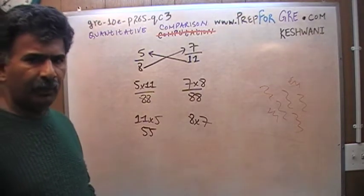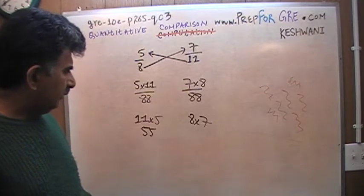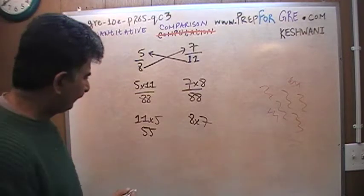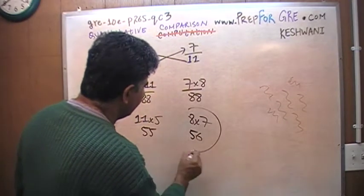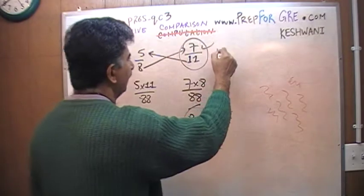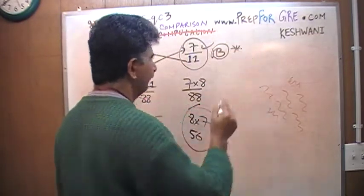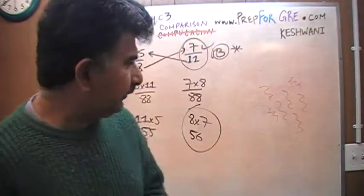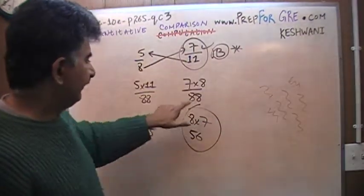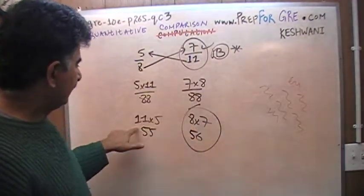7 times 7 I know is 49, 49 plus 7 is going to be 56. Since this is 56 and this is 55, this quantity is bigger. This guy is bigger, the answer is B. That's all. The answer is B because this turns out to be 56, as you can see, and this turns out to be this.